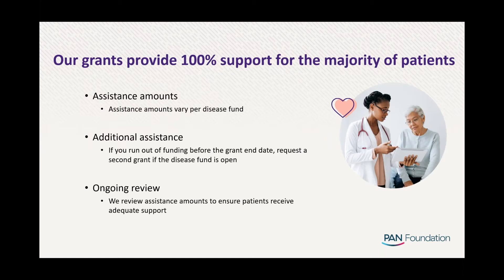At PAN, our grants provide 100% assistance support for most patients. We look at historic data and industry trends to determine how much a patient will need for a specific disease fund and allocate a dollar amount accordingly. In instances where the patient needs additional assistance because out-of-pocket costs are higher than average, we offer second grants to cover the remainder of the enrollment period. If the disease fund is open and a patient runs out of funding before their enrollment period ends, you can apply for a second grant. We also review all assistance amounts annually.